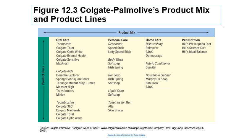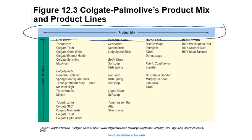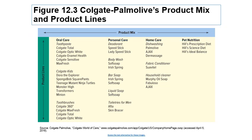You can see the product mix is the collection of all the products sold by the company. Because Colgate-Palmolive sells different types of products — from toothpaste to cleaning products — trying to come up with a strategy that works for all the products might actually be difficult.